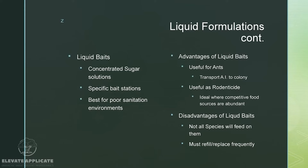Liquid baits are generally concentrated sugar solutions, used in specific bait stations — rat baits, coyote baits, rabbit baits, ant baits. They're best in poor sanitation environments, meaning when the habitat is conducive for the pest. For example, in a food establishment with ants, you place an ant bait in the corner — ants go to it, take it back to the colony, and die. Advantages: useful for ants that transport active ingredient to the colony, useful as a rodenticide, ideal where competitive food sources are abundant. Disadvantages: not all species will feed on them, and you have to refill and replace them pretty frequently.